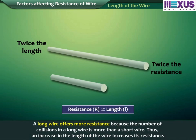Length of the wire. A long wire offers more resistance because the number of collisions in a long wire is more than a short wire. Thus, an increase in the length of the wire increases its resistance.